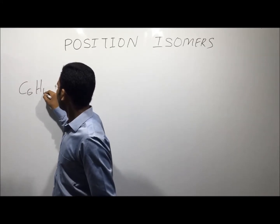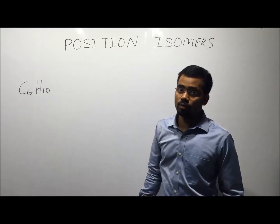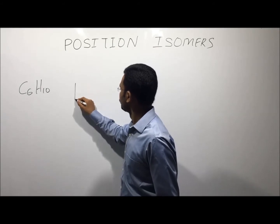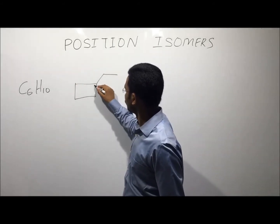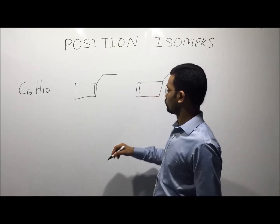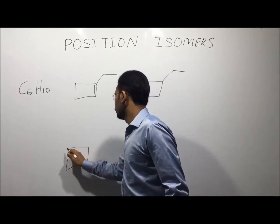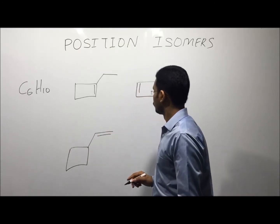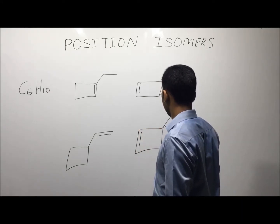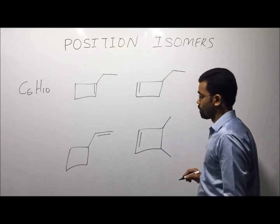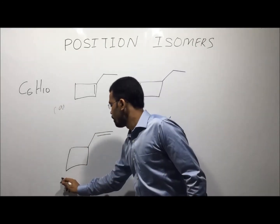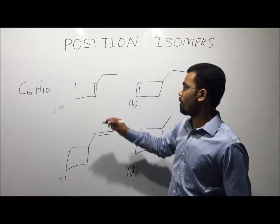C6H10 as the next formula. Now we are going to draw the different structural isomers: A, B, C, and D.